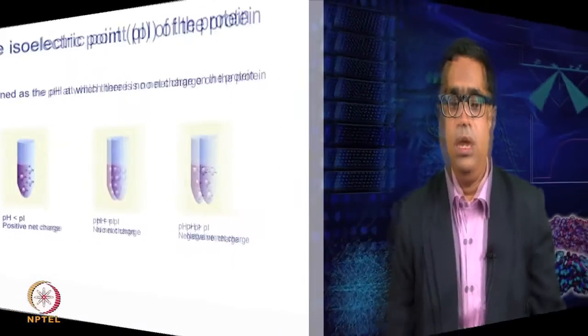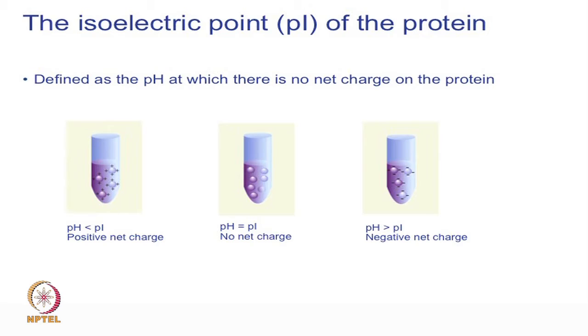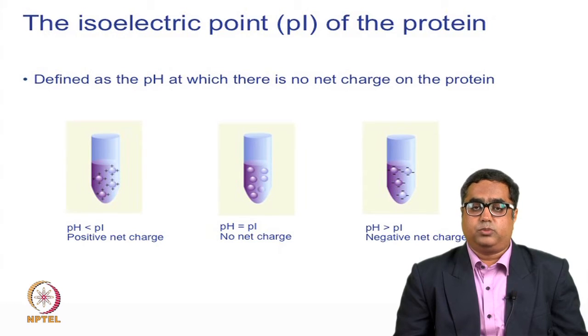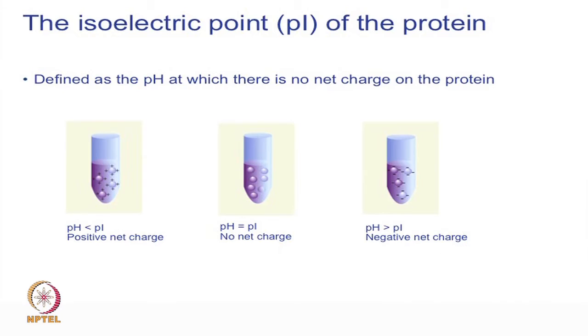A very important point during immobilization design is knowing the PI or isoelectric point of a protein — the point of no net charge, where equal amounts of positive and negative charges are present. For immobilization strategy, it is always better to go at least one or two units below the PI, where amine groups or other functional groups are perfectly exposed and available for covalent coupling.